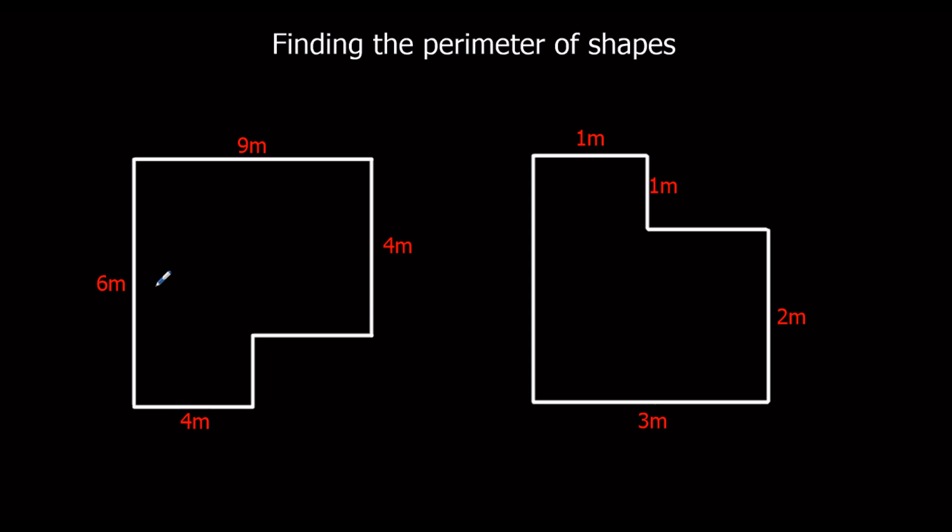So in this case, if we look at this length here, it's 6 the whole way down and 4 down to here, so that means we need another 2 meters in this case to go the whole way. And here we've got 4 meters to here, 9 the whole way, so we need another 5 meters. And now you can see every length, every side of the shape has got the length marked on it.